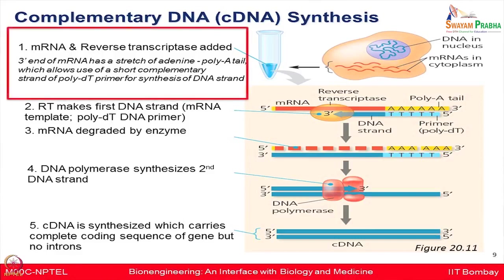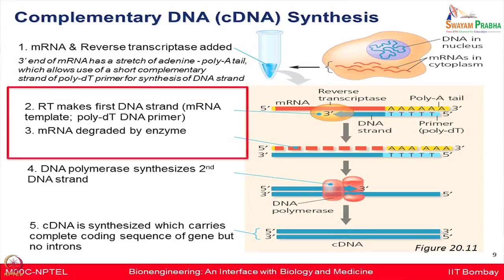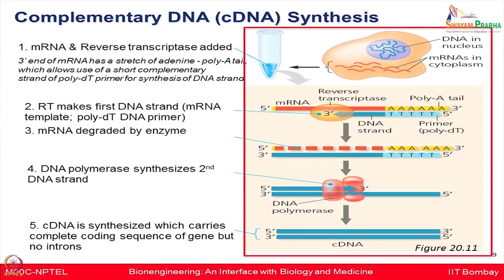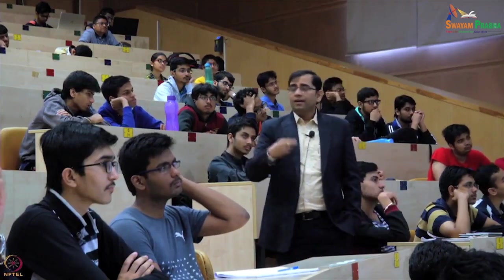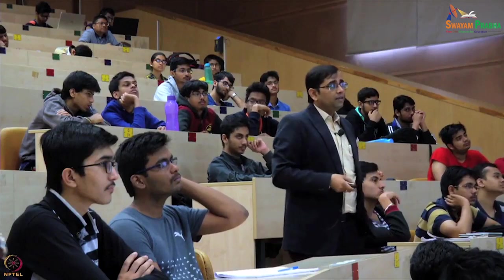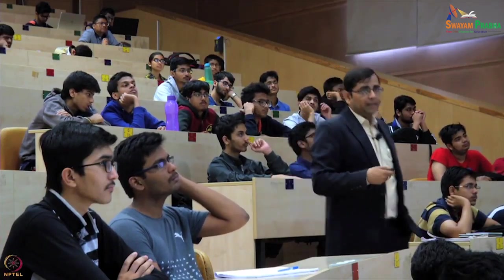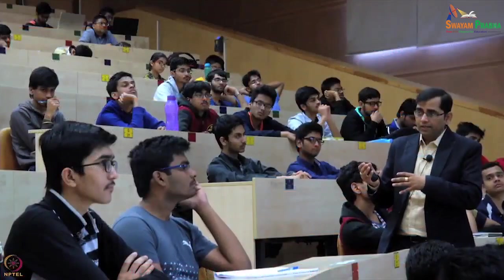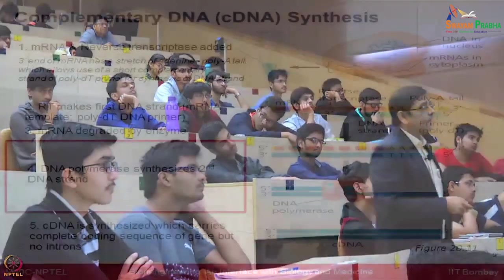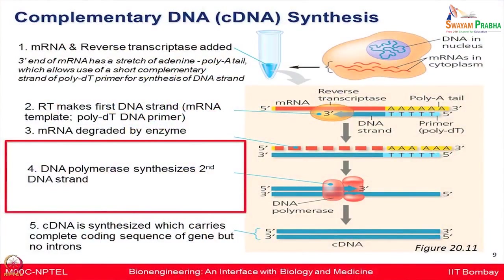With the reverse transcriptase enzyme and the oligo-dT primer provided, the reverse transcriptase starts making the first DNA strand. The original RNA is shown in red, and the new DNA strand being synthesized is blue. An enzyme like RNase H is then added to degrade the mRNA, because you do not want a population of both RNA and DNA together — you want only the cDNA. The RNA is degraded and DNA polymerase is added to synthesize the second DNA strand.